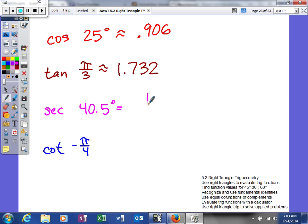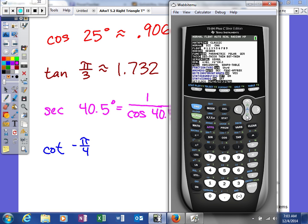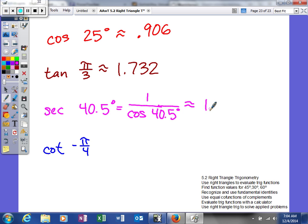So when we're trying to do this, we're going to type in 1 divided by the cosine of 40.5 degrees. Because that's the definition of what secant is - it's the reciprocal of cosine. So we're going to hit 1 divided by cosine of 40.5, and again I need to make sure my calculator is in degrees. So I get 1.315.